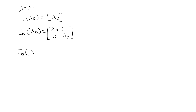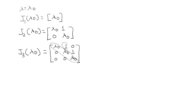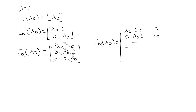A Jordan block of size 3 corresponding to eigenvalue λ₀ is written as: λ₀, 1, 0 in the first row; 0, λ₀, 1 in the second row; 0, 0, λ₀ in the third row. Here λ₀ appears on the main diagonal and 1 on the super diagonal. Similarly, a Jordan block of size K corresponding to eigenvalue λ₀ follows the same pattern — it is a K×K matrix.